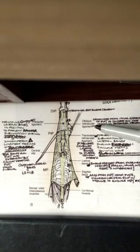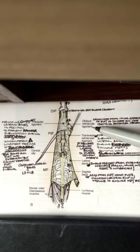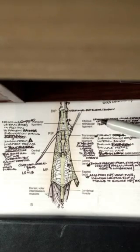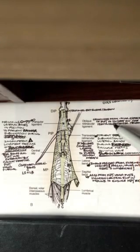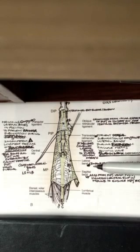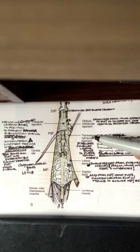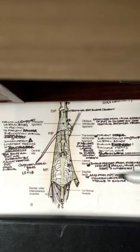The last important thing we need to talk about is the oblique retinacular ligament. It was discovered by Landsmere, sometimes called Landsmere's ligament. Some people say it does nothing. Some people are all about it. Now, it originates from the volar aspects of the PIP joint, which is a common trend. It seems like the transverse retinacular ligaments and the sagittal bands all originate from volar plates, respected to where they are.